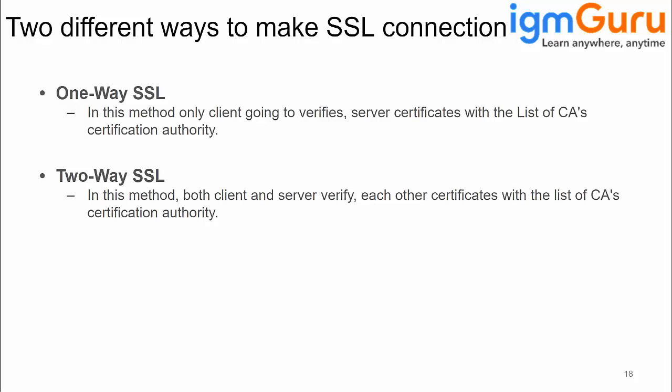In two-way SSL, the client also shares its certificate with the server, and the server validates and verifies that certificate in its own trust store. So both parties validate each other's certificates. In one-way SSL, only the client verifies the server certificate. In two-way SSL, both client and server validate each other's certificates.